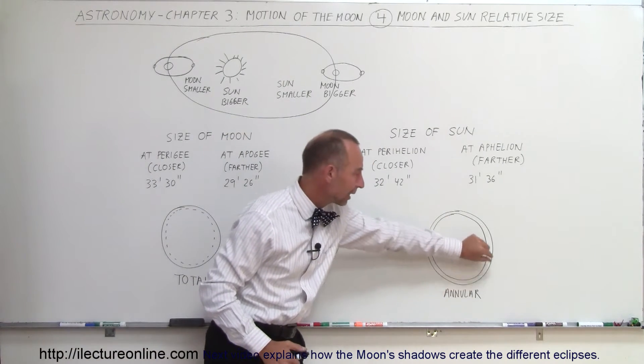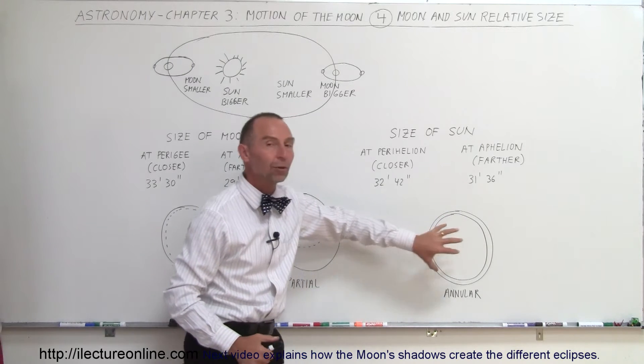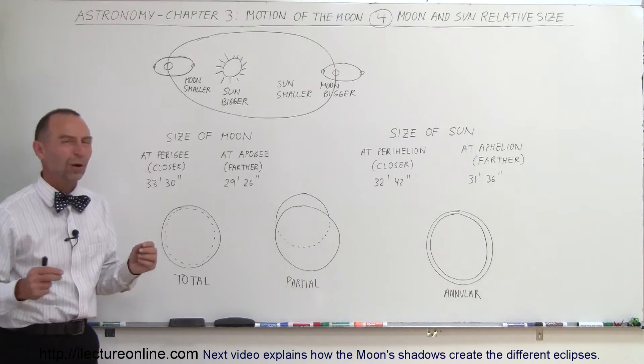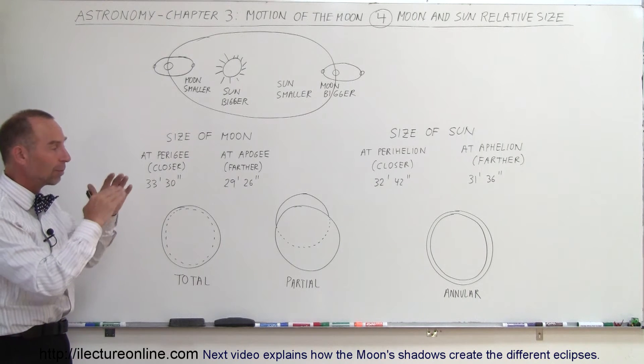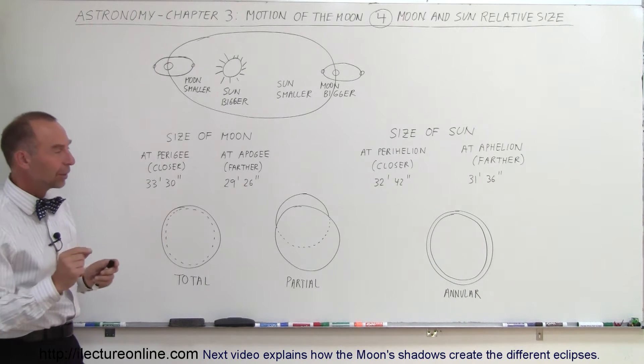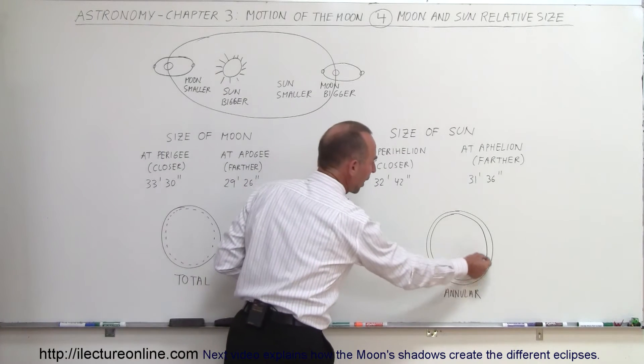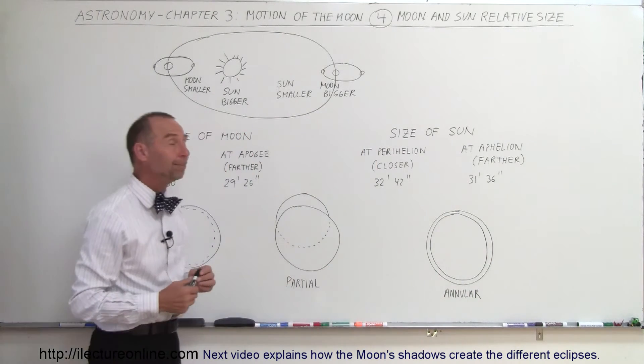So you can still see the Sun shining brightly on the edges, but the Moon will cover the rest of the disk of the Sun. One of those cases where you want to have special glasses, not just sunglasses, but special glasses to be able to look at something like that because even the ring is extremely bright and can damage your eyes when you look at it.